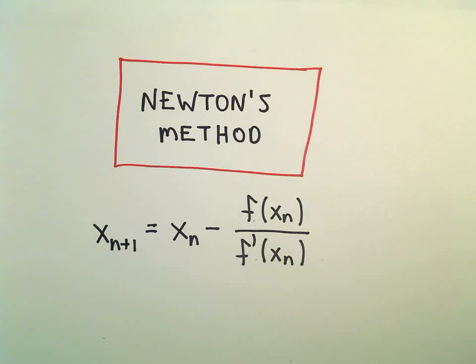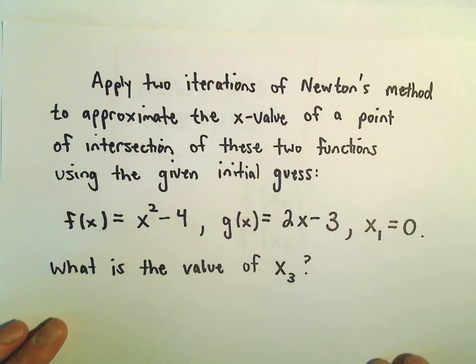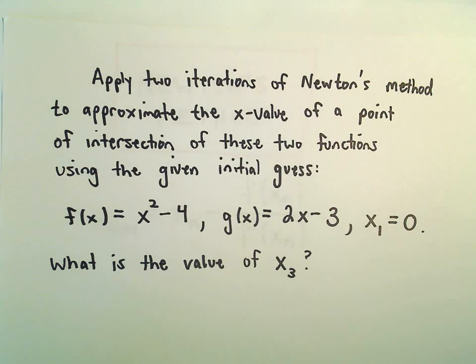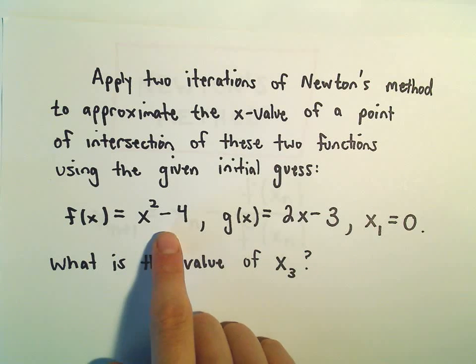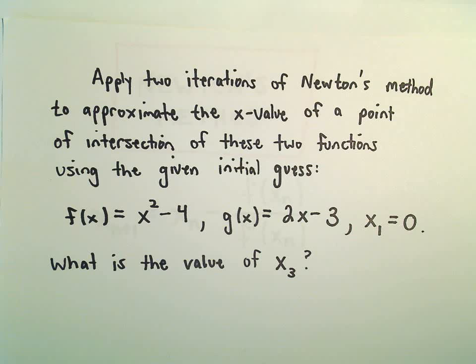Okay, so here we're going to do one more example using Newton's method. We're going to use two iterations of Newton's method to approximate the x-value of a point of intersection of the functions x squared minus 4 and 2x minus 3.